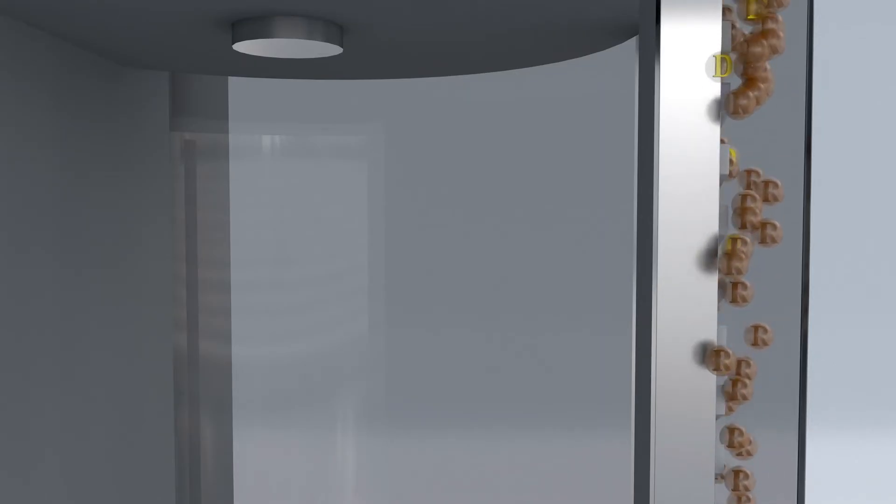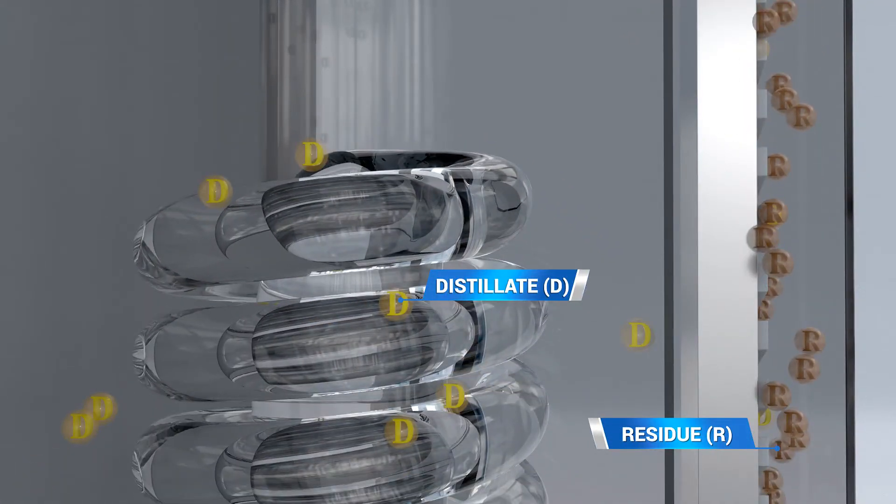In this view, we see the crude oil mixture entering the sidewall of the evaporator. In this illustration, the mixtures are composed of distillate and residue, shown hypothetically as the letter D and R.